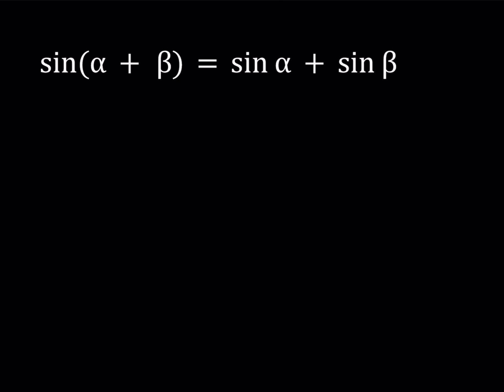So I have the sine of the sum on the left-hand side and I have the sum of the sines on the right-hand side. Obviously, this is not always true. The sine of the sum of two angles does not always equal the sum of their sines.